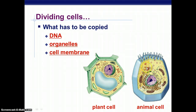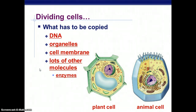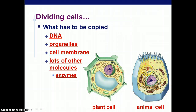Once you get the inside taken care of, you have to think about what's on the outside of these cells. There's the cell membrane for the animal cell, but there's also a cell wall for a plant cell. And before we said that you had to copy organelles and other molecules — what exactly are these other molecules? We've been talking about cell respiration, photosynthesis, and protein synthesis. All of those things require enzymes, so in order to have functioning new cells, they also need those enzymes that allow them to make proteins and carry out cellular functions.